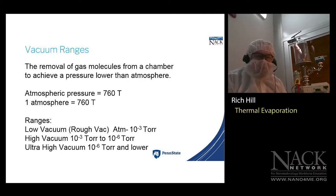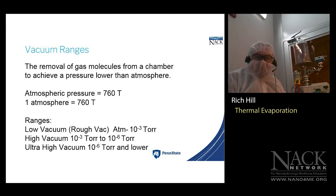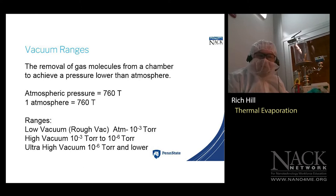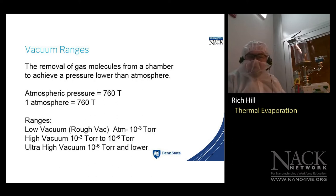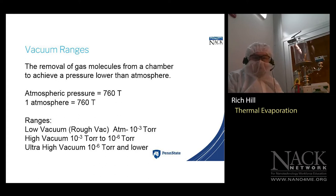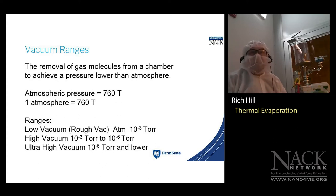We have several vacuum ranges. Low or rough vacuum goes from atmosphere down to 10⁻³ Torr — that's what we're going to use today in our demonstration. High vacuum ranges from 10⁻³ down to 10⁻⁶ Torr. Then ultra-high vacuum goes from 10⁻⁶ down as low as you can get — people try to get very, very low sometimes.